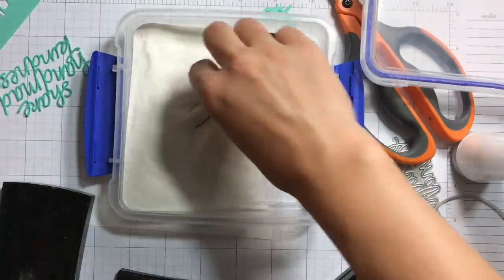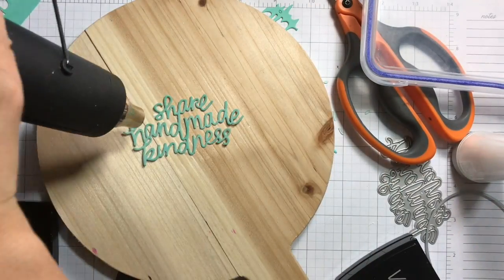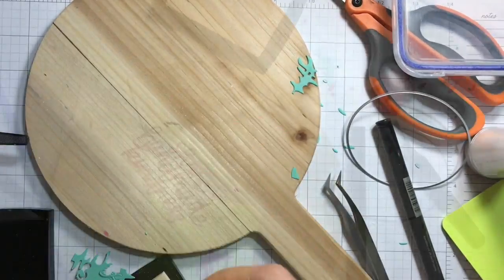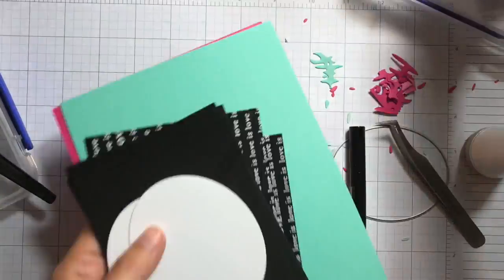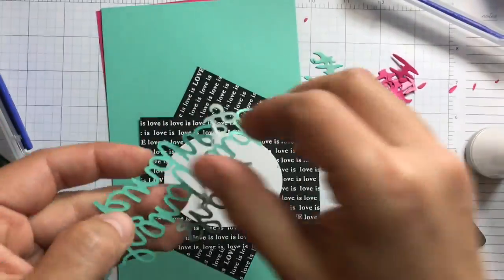I'm just applying some Versamark onto the die cut and then some fine clear embossing powder from Hero Arts and heat setting that. Then the little dot for the eye, and I'll repeat the same for the pink one.